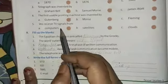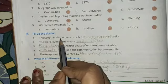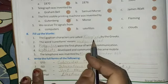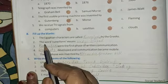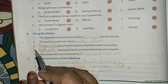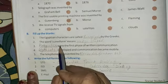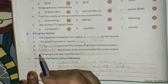Now next one, fill up the blanks. Number 1, the Egyptian characters are called hieroglyphs by the Greeks. Number 2, the word cuneiform means wedge shaped. Number 3, pictographs were the first phase of written communication.